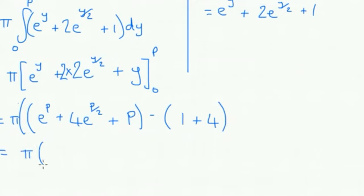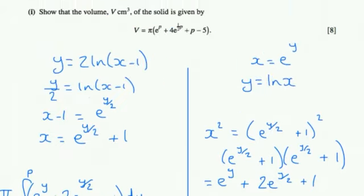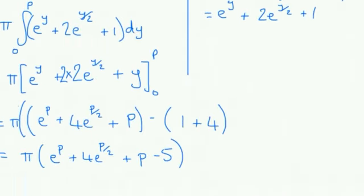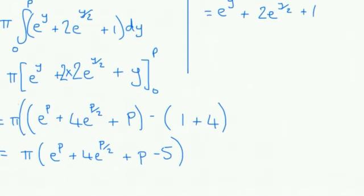So, that's pi e to the p, plus 4 e to the p over 2, plus p, take 5. And if you look at what they've written, that's exactly the same as what we've got. So, we've finished part 1.